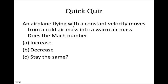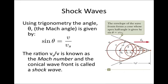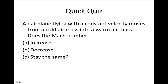Here's a question: an aeroplane flying at constant velocity moves from a cold air mass into a warm air mass. Does the Mach number increase, decrease, or stay the same? As it goes into the warmer air, the density decreases and the speed of sound increases. Going back to Mach number = v_s / v: v_s stays the same but v increases, so since v is in the denominator, the Mach number must be decreasing. The correct answer is B, decreasing.